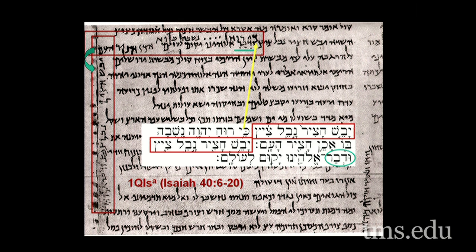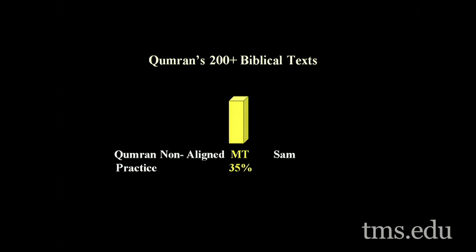What do we do with the Qumran texts and the various texts found at Nachal Hever, Wadi Murabaat, and many other places? There are a number of locations where scrolls were found around the region of the Dead Sea, not just at Qumran. There are over 200 biblical scrolls — over 1,000 total scrolls, but not all of them are biblical books. To date, 214 biblical scrolls representing biblical books have been identified.